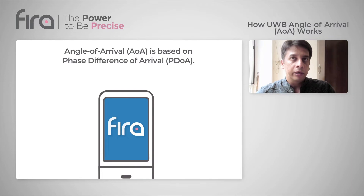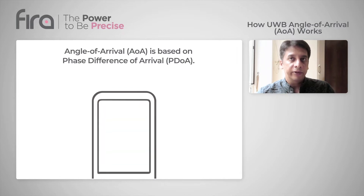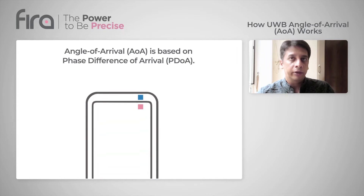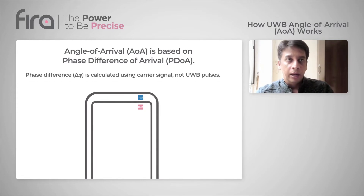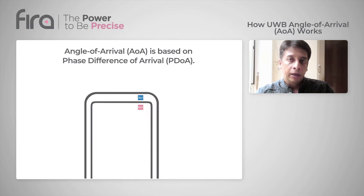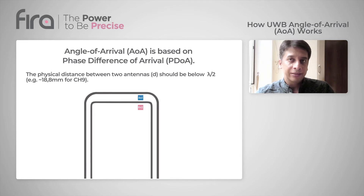In two-way ranging, PDOA calculation is done using the phase difference between the two antennas of a received signal. Generally, when you have to do AOA, you use two antennas, and care should be taken so that these two antennas are spaced out on the hardware at lambda by 2, which is near 18.8 mm for a channel, as an example.